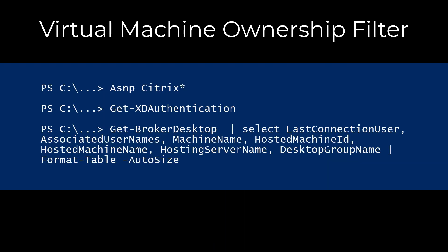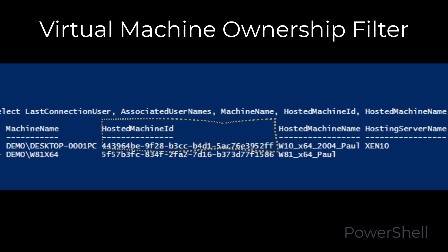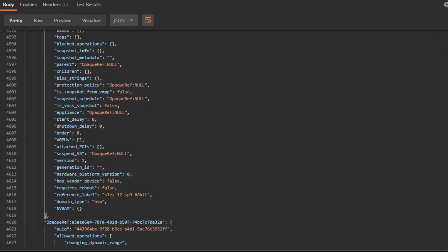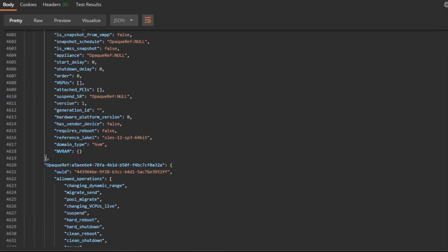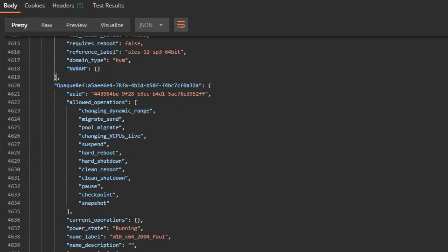If we do need to filter virtual machines per user, and that ownership can be provided via Citrix Cloud Connectors over PowerShell requests, we can easily do that by getting unique machine identifiers via PowerShell interfaces to the Citrix VDC infrastructure, and subsequent machine filtering over the Citrix Hypervisor query by matching unique identifiers.